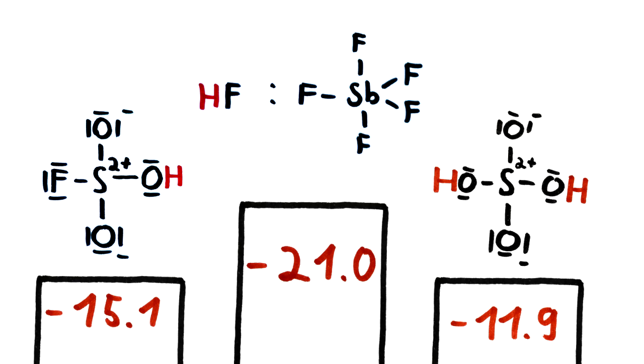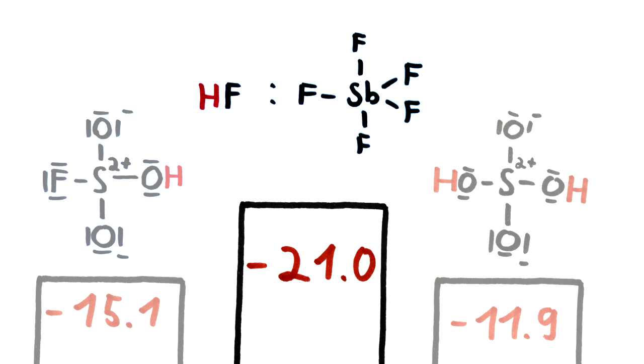but since the acidity is defined as -10 raised to the power of H0, the mixture of hydrogen fluoride and antimony pentafluoride is actually one billion times stronger than pure sulfuric acid.